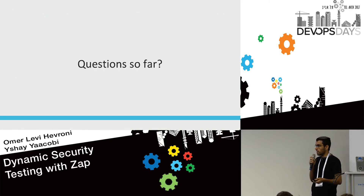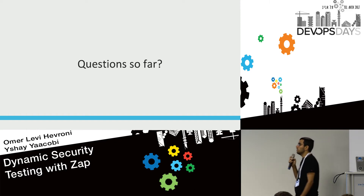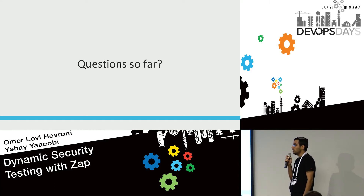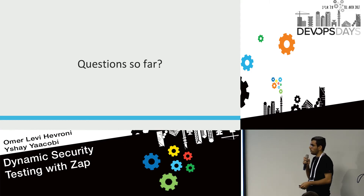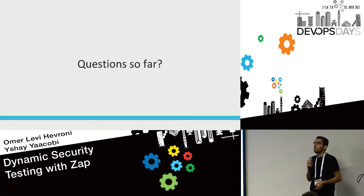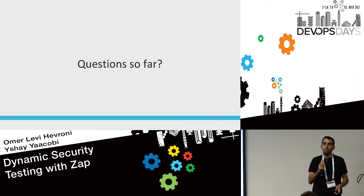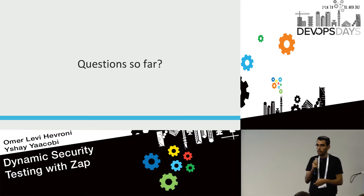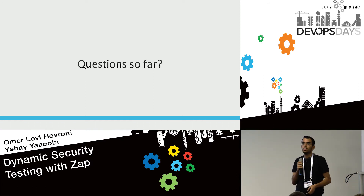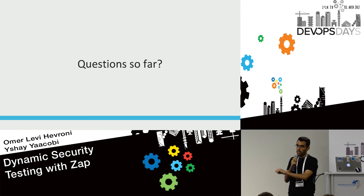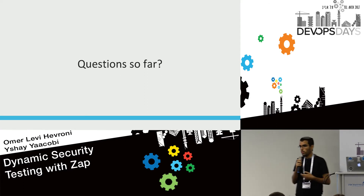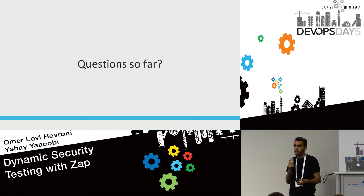Q&A: ZAP is typically run against a dev or staging environment with your database, not production, because active mode might cause side effects. Passive mode is okay to run anywhere since it doesn't actively do anything. Regarding updating vulnerabilities: all the active and passive scan rules come from the open source community, you can contribute your own scan rules if something isn't covered, and ZAP has an update mechanism to keep them current.